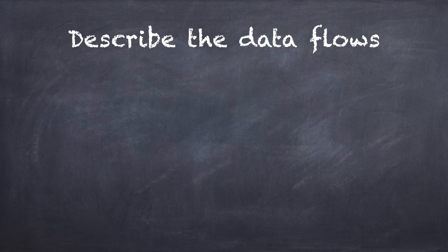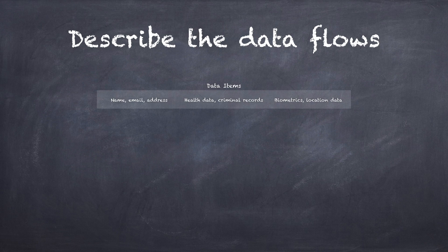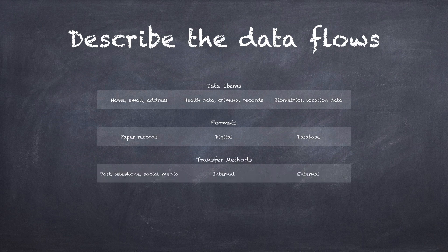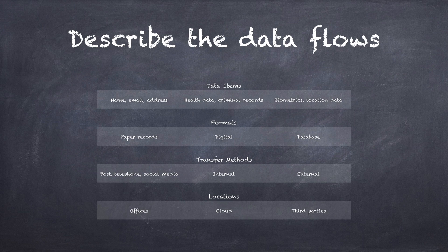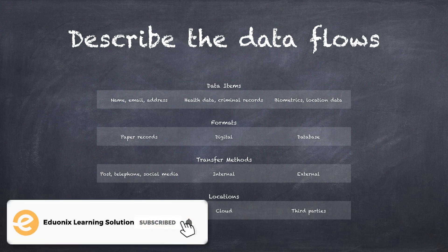The objective of describing data flows is to walk through the information life cycle of your solution to identify unforeseen or unintended uses of the data. Consider these factors: what data the device is collecting or processing, such as names, criminal records, or biometrics; the medium on which the data is being stored — whether paper, a USB drive, flash storage on the device, or a database in the cloud; how data gets from its source to its destination and whether it travels over a network; and where the data, device, and databases are located.